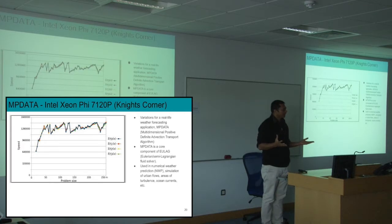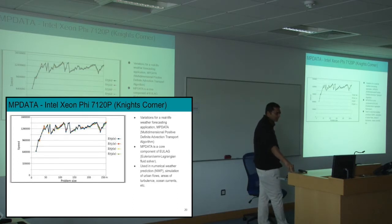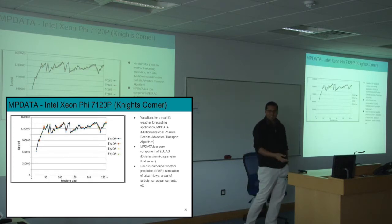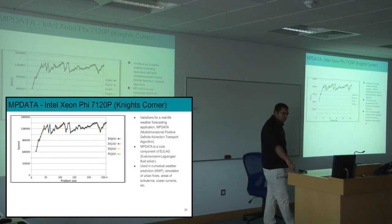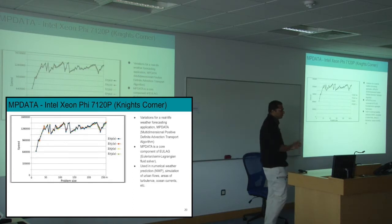I've shown these basic kernels — is this true for a real-life application? We have MPDATA, the weather forecasting application. It's a multi-dimensional positive-definite advection transport algorithm, a core component of an EULAG solver — a computational fluid dynamics solver used for numerical weather prediction and simulation of urban flows. This is a real-life production application, and this is the profile. It used to be very smooth; right now, there are really significant drops in performance.